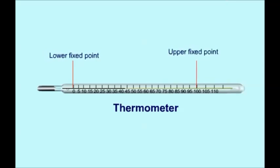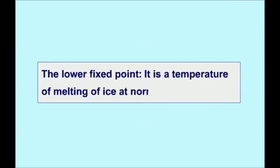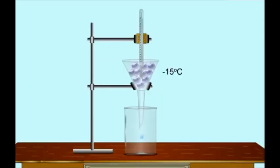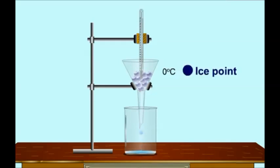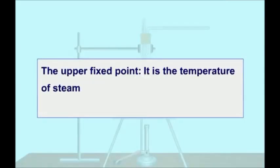The lower fixed point in a thermometer is the temperature of melting ice. Ice starts melting at zero degrees Celsius. At that particular point, the graduation is taken to be the lower fixed point of a thermometer.